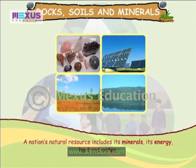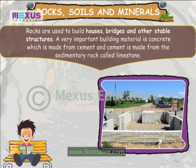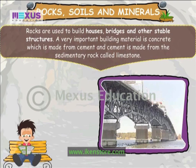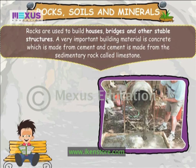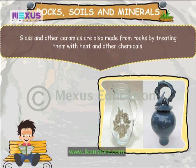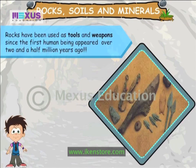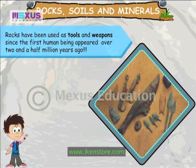A nation's natural resources include its minerals, energy, land and water. Rocks are used to build houses, bridges and other stable structures. A very important building material is concrete, which is made from cement, and cement is made from the sedimentary rock called limestone. Glass and other ceramics are also made from rocks by treating them with heat and other chemicals.